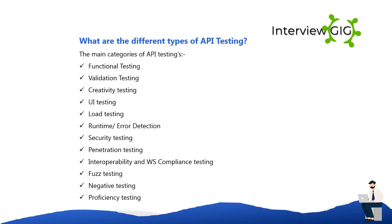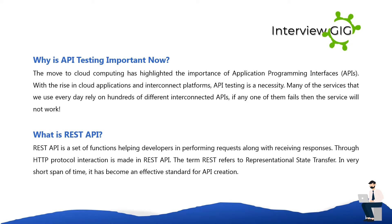What are the different types of API testing? The main categories of API testing are: functional testing, validation testing, UI testing, load testing, runtime/error detection, security testing, penetration testing, interoperability and WS compliance testing, fuzz testing, negative testing, and proficiency testing.